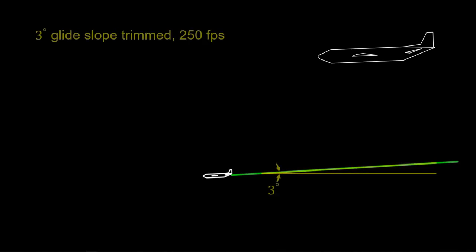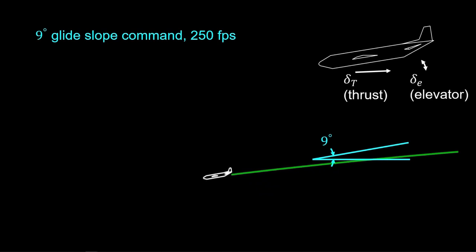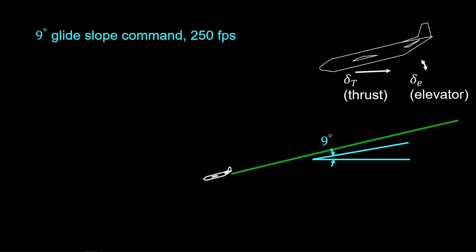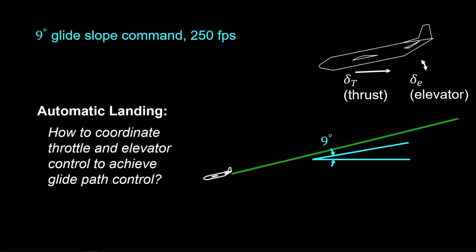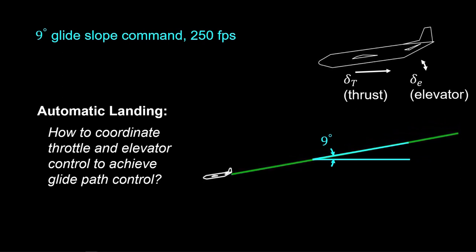Holding a 3-degree glide slope at 250 feet per second, this aircraft receives a sudden command to 9 degrees while holding airspeed. The automatic landing control system simultaneously coordinates thrust and elevator effects to achieve the commands. In this lesson, we develop and demonstrate this automatic glide slope control.